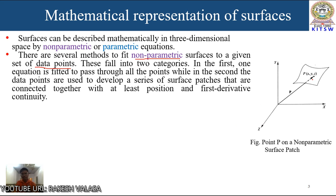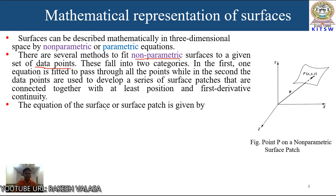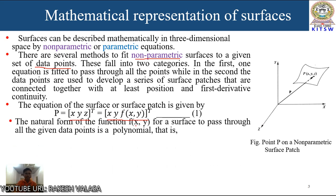Let us see the point P on a non-parametric surface patch. Here, I have taken one point on a non-parametric surface patch in the Cartesian coordinates x, y, z. The equation of the surface patch for non-parametric equations is given by P equal to [x, y, z] transpose equal to [x, y, f(x,y)] transpose, where z equal to f(x, y), similar to the mathematical representation of non-parametric curves. The natural form of the function f(x, y) for a surface to pass through all the given data points is a polynomial.